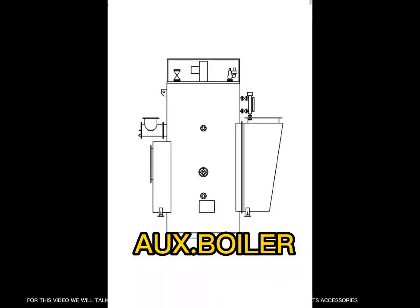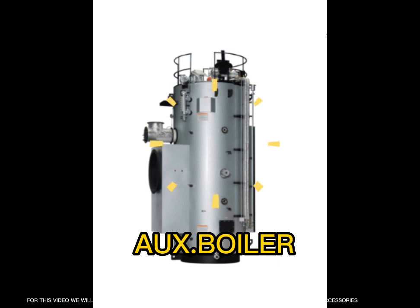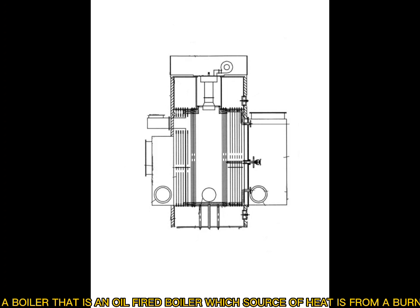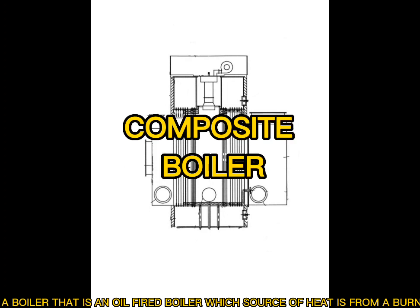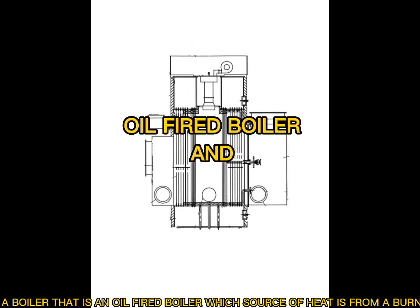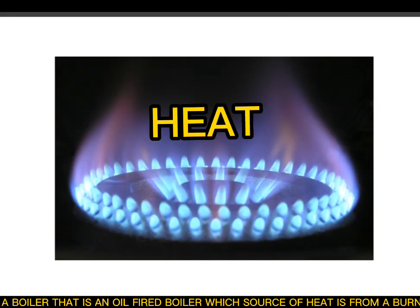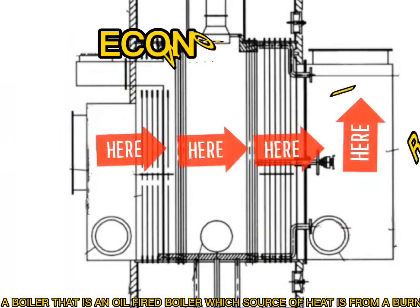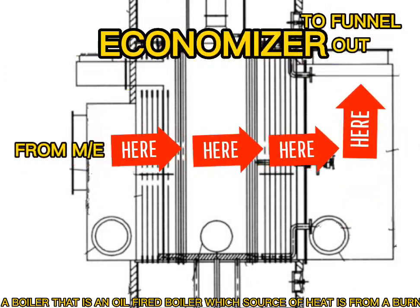For this video, we will talk about auxiliary boiler. We will discuss its composition and its parts and accessories. A composite boiler is a boiler that is an oil-fired boiler whose source of heat is from a burner and from an exhaust gas from the main engine through an economizer.